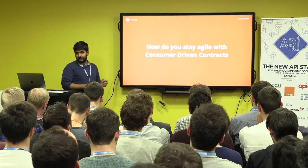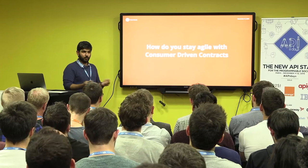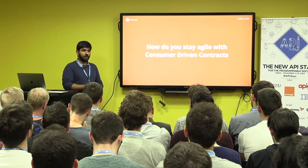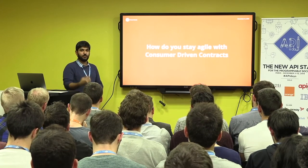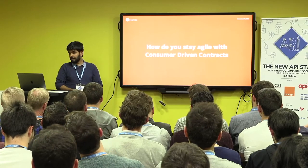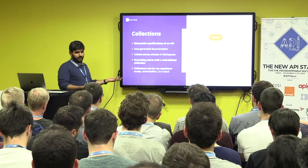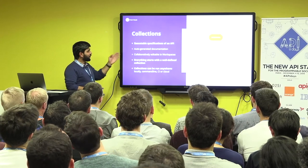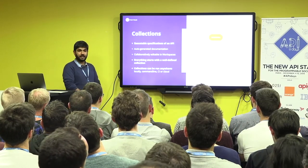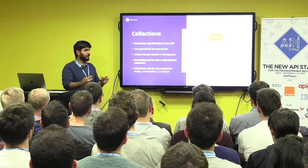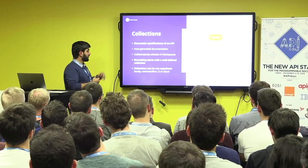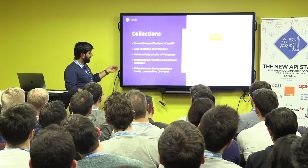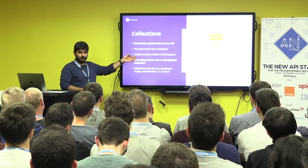I'll focus on the strategies we use at Postman to integrate consumer-driven contracts and stay agile while doing concurrent development across multiple microservices, enabling independent deployments. We use Postman because — dog food, right? A Postman collection is an executable specification of an API. It allows you to define the API and execute it, and it's collaboratively available to anyone within your team. These collections can be executed locally within the Postman app, in the command line or CI systems, and also within the cloud.